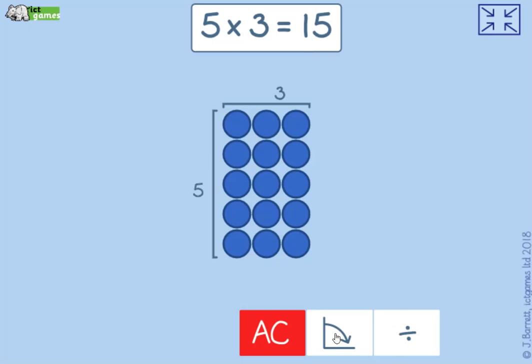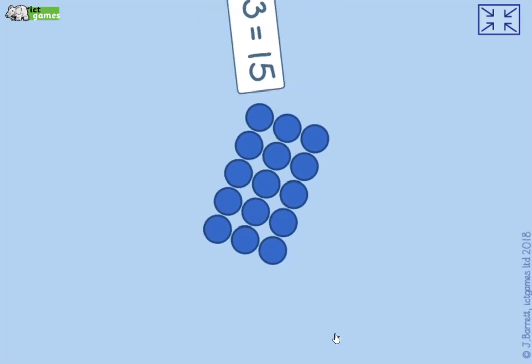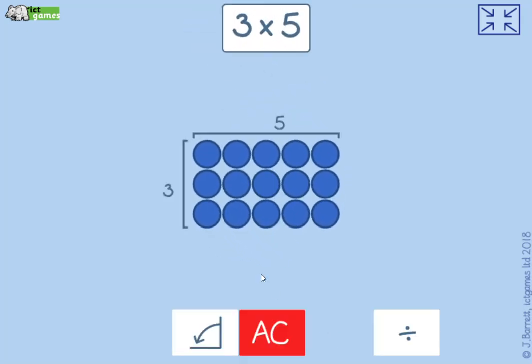Now I want to be able to show that multiplication can be done in any order, so I'm going to rotate my array. And now I've started with three counters, one, two, three, and how many times I'm going to have three? Five times: one, two, three, four, five.